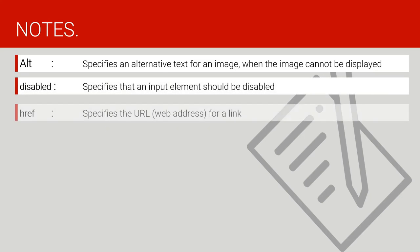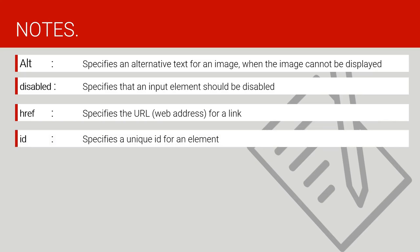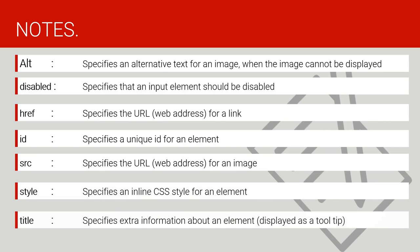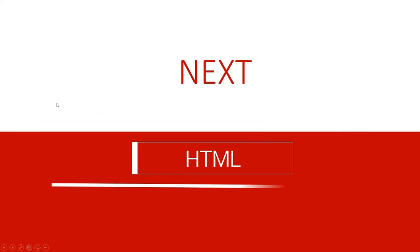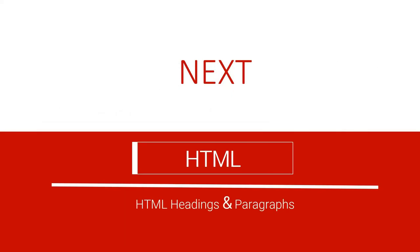Here are some attribute notes: alt specifies alternative text, disabled disables an element, and we've also covered href, id, style, and title. In the next lecture we are going to discuss HTML headings and paragraphs — I hope you don't miss it. Please subscribe to our channel and like the video if it was helpful. See you in the next lecture.